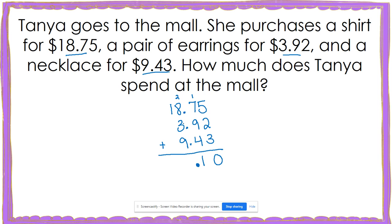Two plus eight is 10. 10 plus three is 13. 13 plus nine is 22. So I write my two and carry my other two. Two plus one is three. This means that Tanya spent $32.10 at the mall.